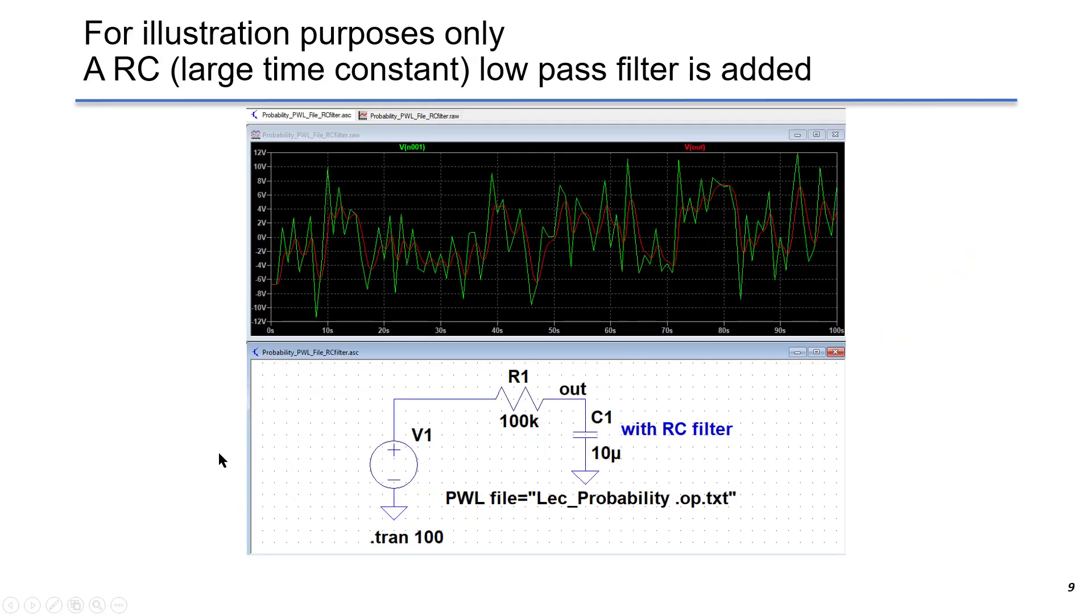Just for illustration purposes only, we add a RC filter after the voltage V1. This is a pretty large time constant. We can see the input data is in green. We got a pretty sharp change of voltage. After the RC filter, the sharp spikes become rounded, and we got a low-pass filtered output voltage.